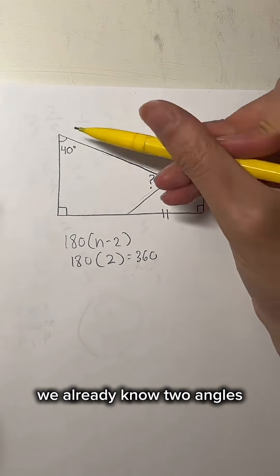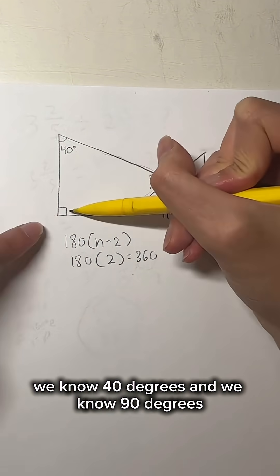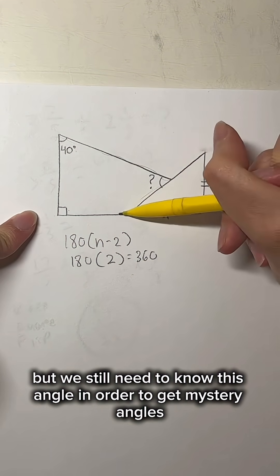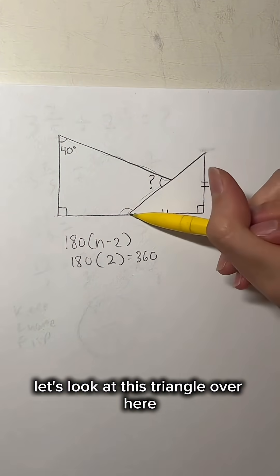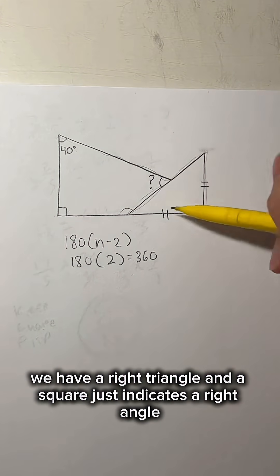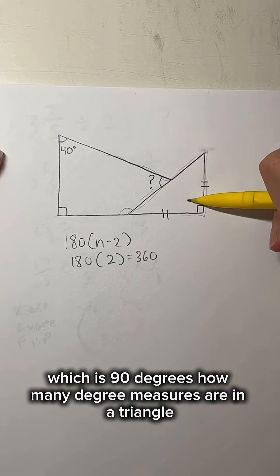Now how do we get this mystery angle? We already know two angles: 40 degrees and 90 degrees, but we still need to know this angle in order to get the mystery angle. How do we do that? Well, let's look at this triangle over here. We have a right triangle, and the square just indicates a right angle, which is 90 degrees.